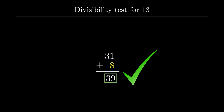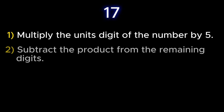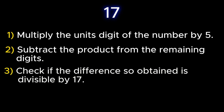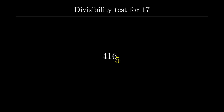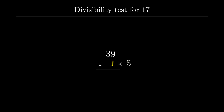Moving on to the next prime number, that is number 17. To check whether a number is divisible by 17, multiply the units digit by 5 and subtract it from the remaining digits. If the difference is divisible by 17, the given number is also divisible by 17; repeat the process until a comparable number is obtained. Consider the number 4165. The units digit 5 is multiplied by 5, giving 25, which is subtracted from the remaining digits 416, giving 391. Repeating: 1 × 5 = 5, subtracted from 39, gives 34. Since 34 is divisible by 17, the given number is also divisible by 17.